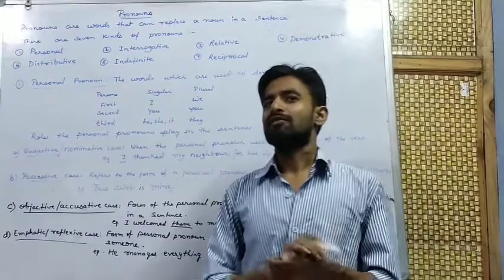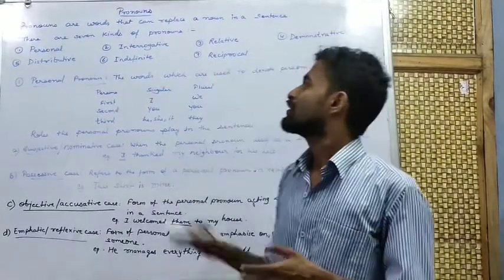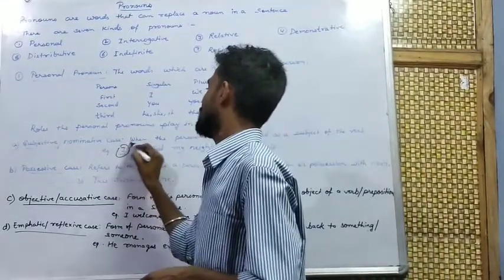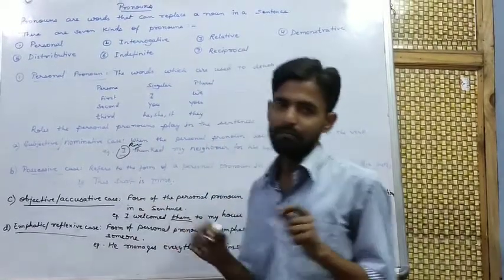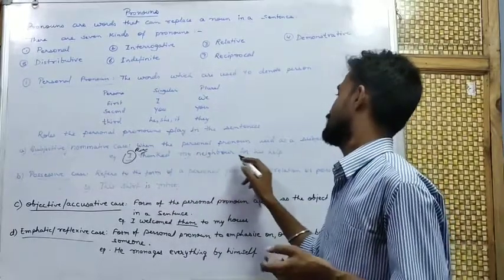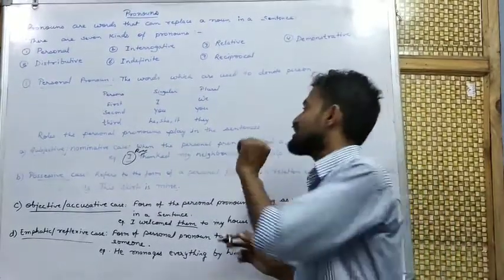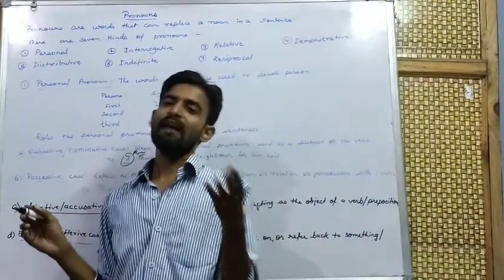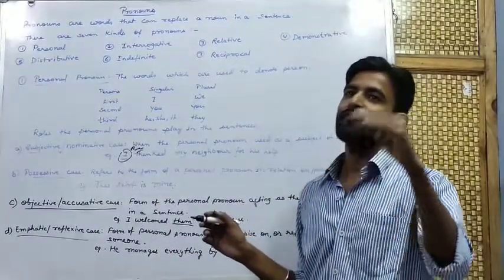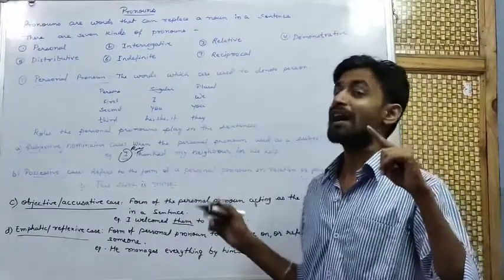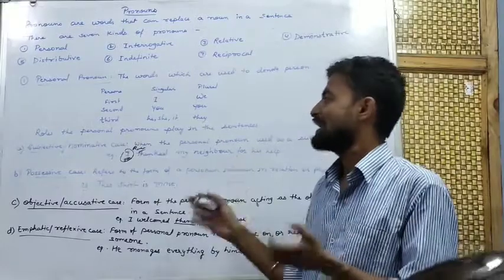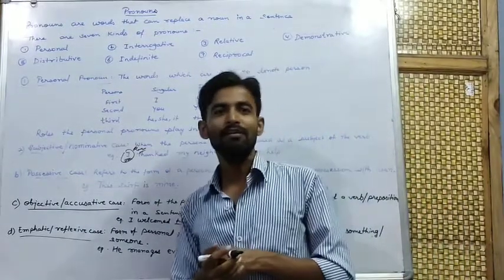For example: 'I thanked my neighbor.' Here, instead of 'I' we can write 'Ram.' Ram is a name — a proper noun. So 'Ram thanked my neighbor for his help.' Here, if we use Ram instead of I, then Ram is the noun, and we have used 'I' instead of Ram. So 'I' is a pronoun.